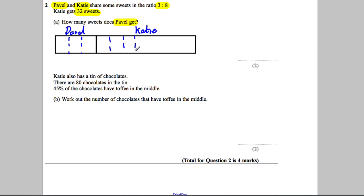So 1, 2, 3, 4, 5, 6, 7, 8. So we know that Katie gets 32 sweets, so Katie's part here is worth 32 and she's got 8 places. So 32 divided by 8 equals 4, so we know 4 goes in each box.